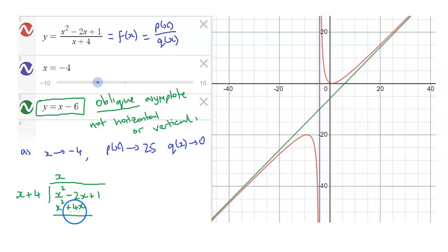So that would be minus 6x plus 1, and so we go ahead and multiply by minus 6, there's the x minus 6 part, and so we get minus 6x minus 24, and then we get 25 as our remainder.